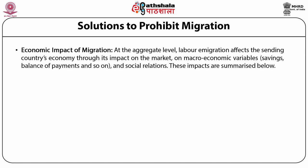Economic impact of migration: at the aggregate level, labour immigration affects the sending countries' economy through its impact on macroeconomic variables, savings, balance of payments, and social relations. Four major categories of interventions can be emphasized, which differ for internal and external migration: first, addressing underdevelopment and improving the synergy between migration and development; second, improving labour market outcomes; thirdly, ensuring basic entitlements to migrant workers; and finally, improving the social and political environment for migration.